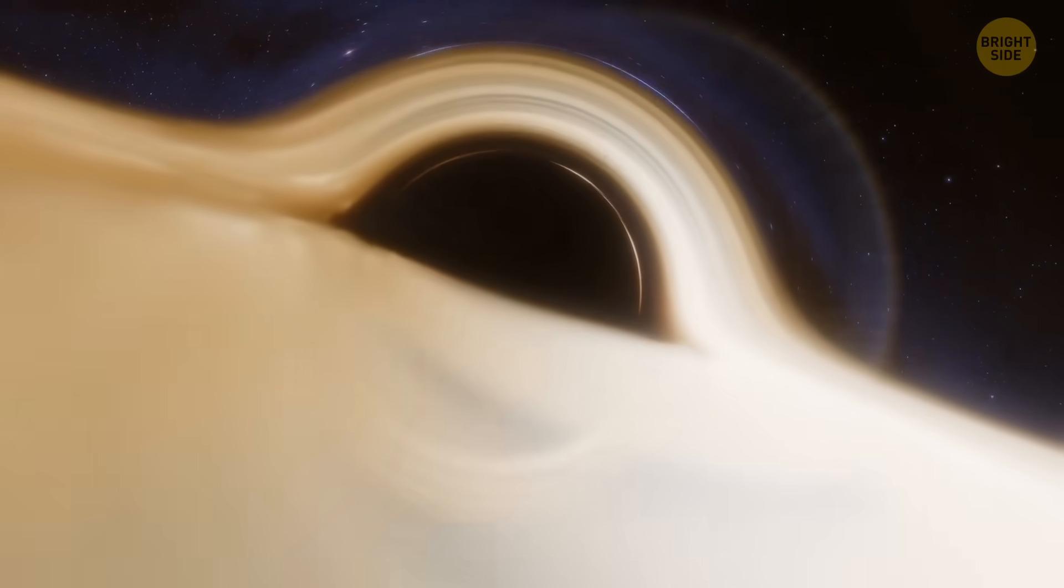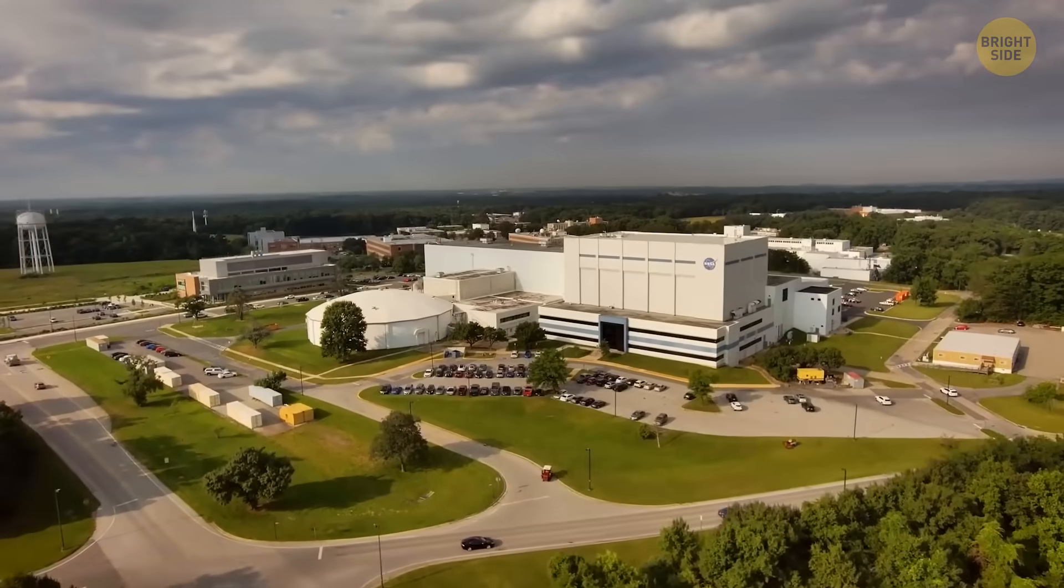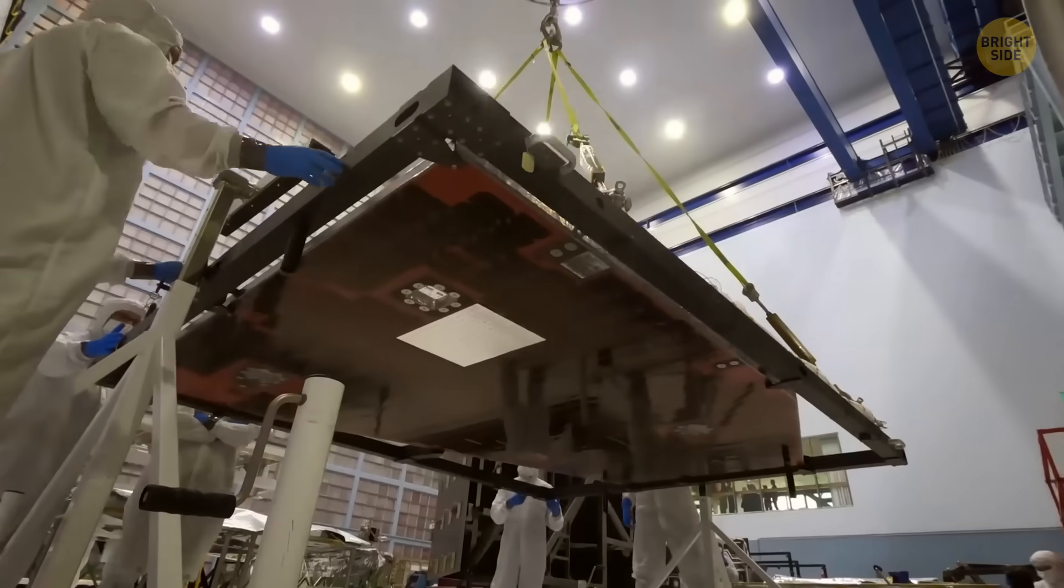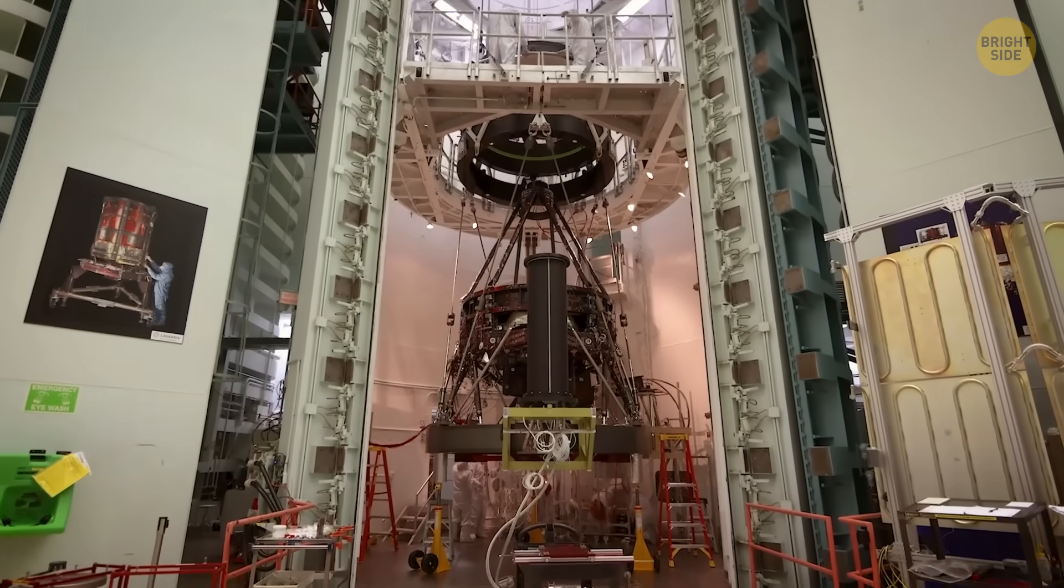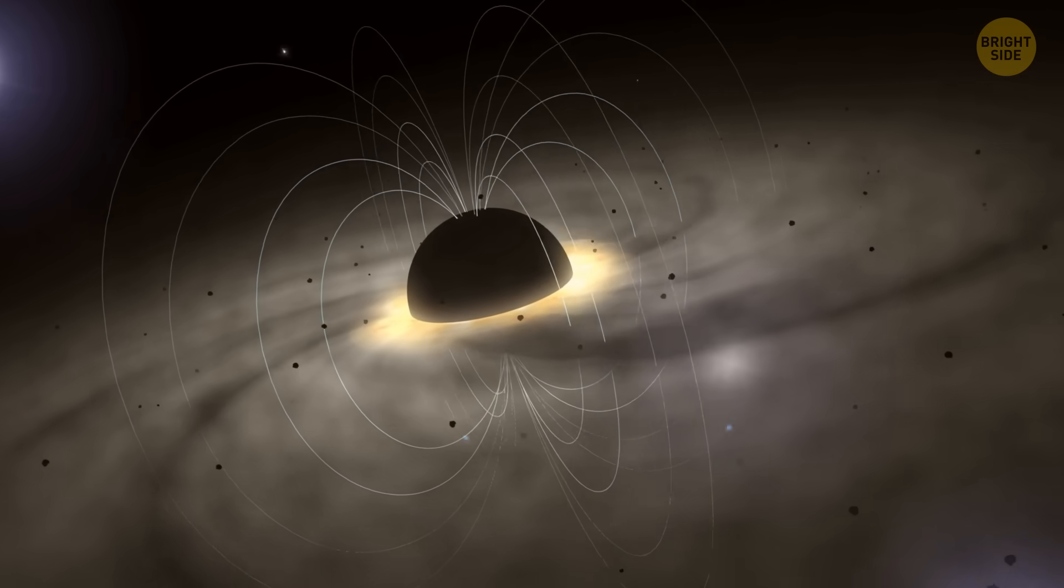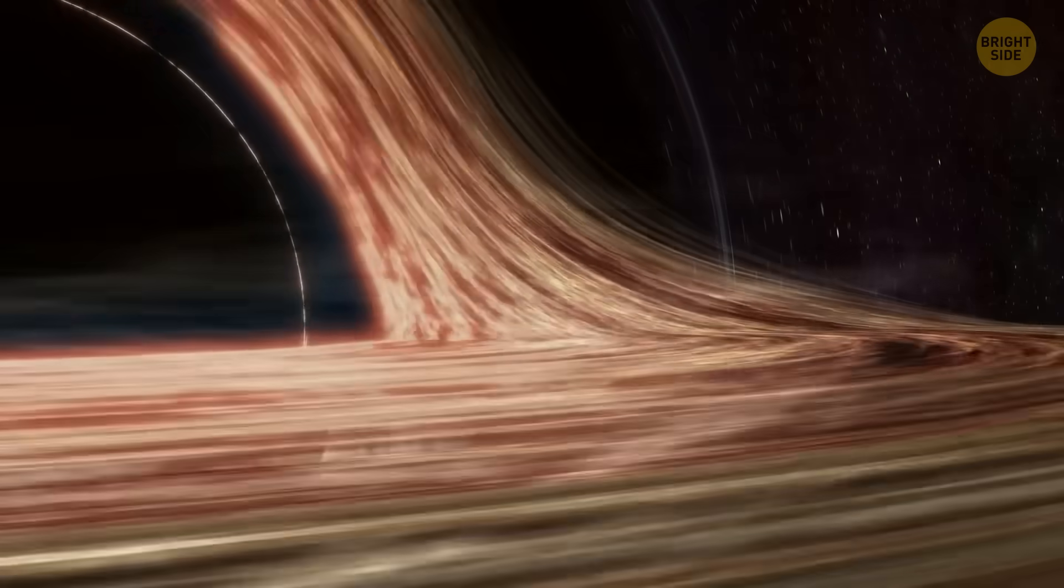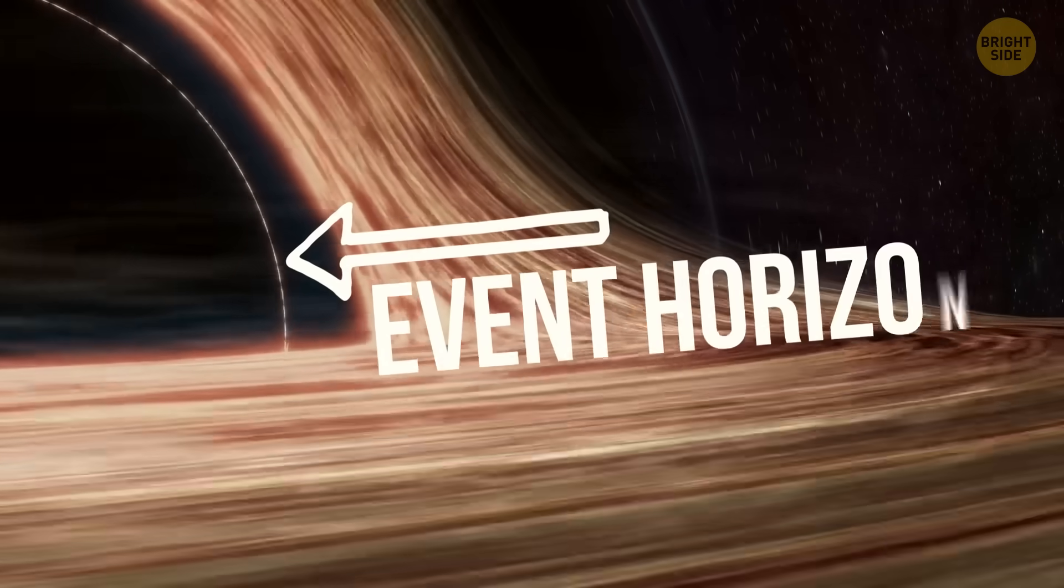While black holes themselves are far away and difficult to study directly, scientists find new clever ways to study their properties right here on Earth. They've been able to recreate certain features of black holes in the lab. For example, black holes have a gravitational pull so strong that nothing, including light, can escape once it crosses the event horizon.